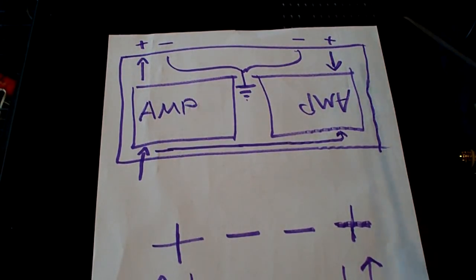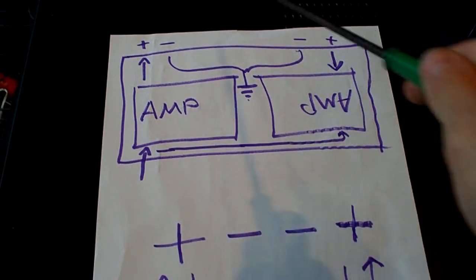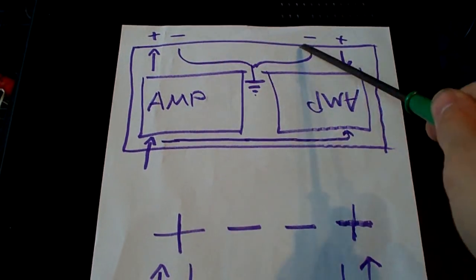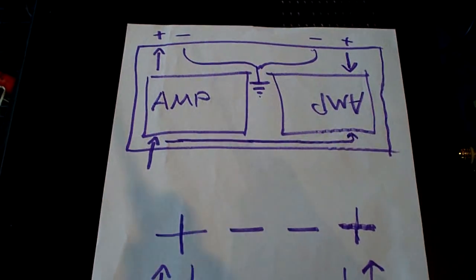Which is why when you're using bridgeable amplifiers, you'll find that when you bridge them, you actually connect the terminals of the speaker to both positive ones and you don't connect anything to the negatives because they don't go anywhere. They just go to the ground.